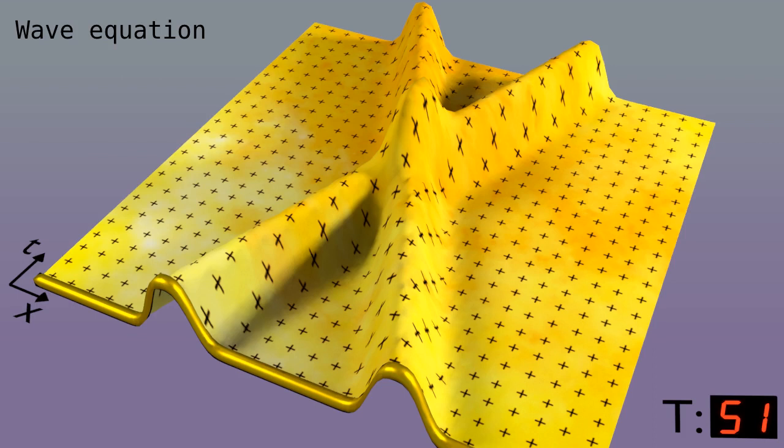One thing to notice with this linear wave equation is superposition. The two bumps move right through each other, as if the other didn't exist. There is no interaction.